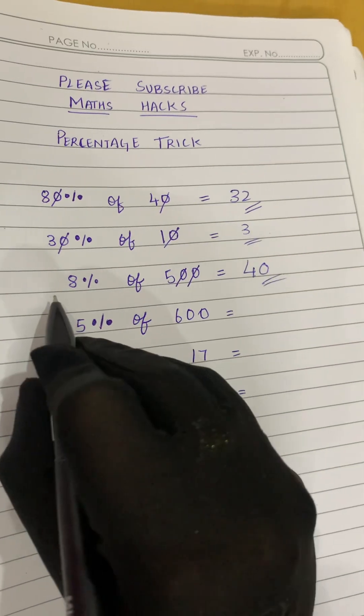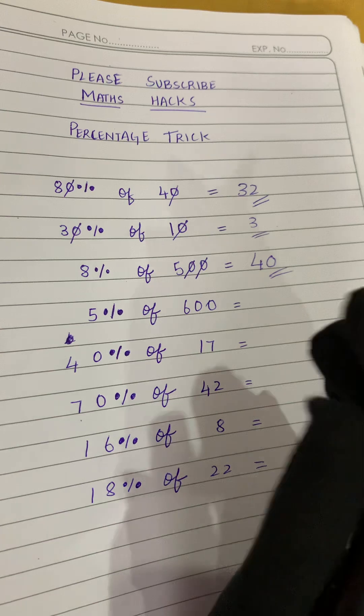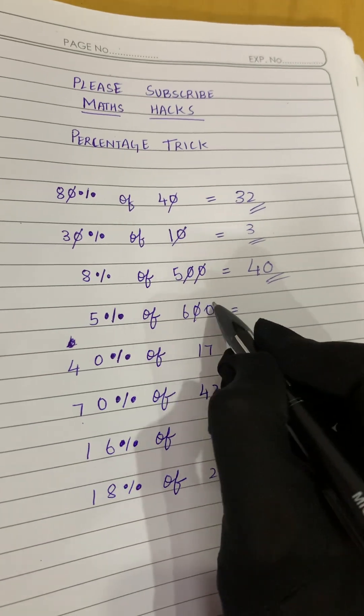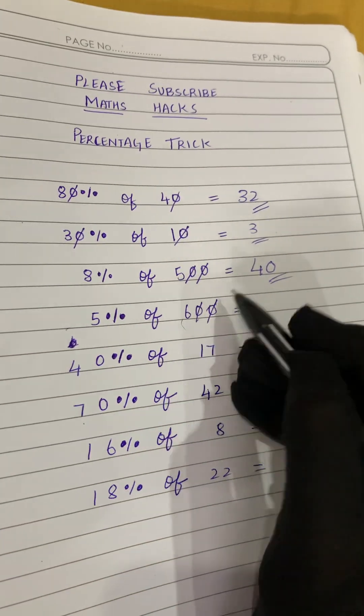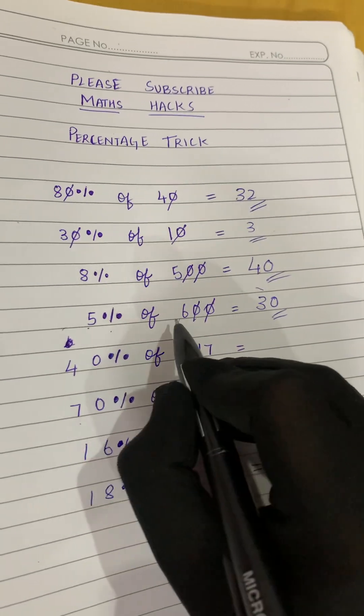Now 5% of 600. We will cancel the zeros first. Now what is left? 5 and 6. So 5 sixes are 30, so 30 is our final answer. So 5 percentage of 600 is 30.